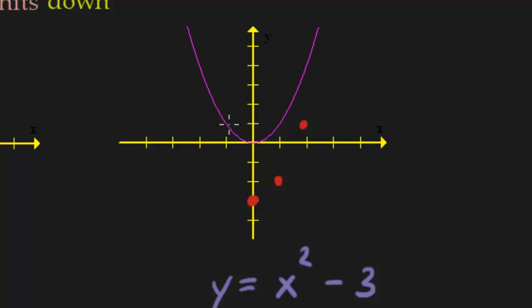So if we're negative 1, positive 1, we go down 3. Puts us here. Negative 2,4. We go down 3. Puts us right there.